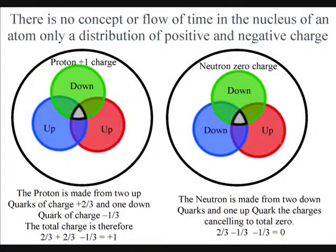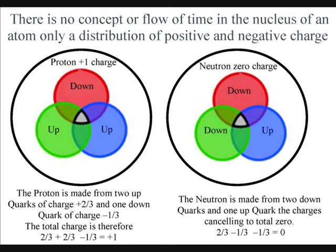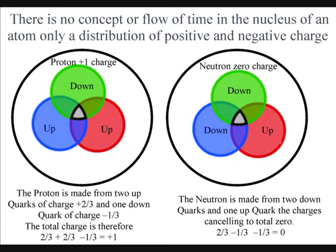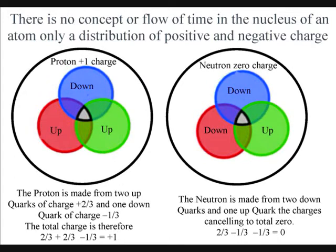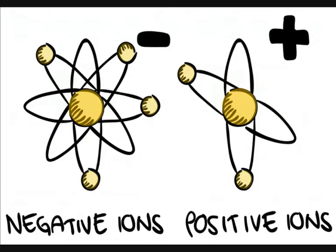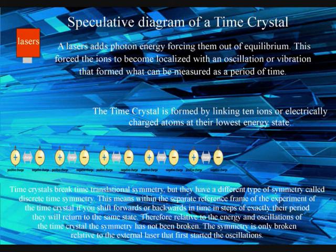The problem scientists had in creating time crystals is that there is no passage or flow of time in the subatomic world of quantum mechanics. Therefore, they had to create a quantum system that had a passage or flow of time. This was done by chaining together a line of ten ions, or electrically charged atoms, at their lowest energy state, known as the ground state.